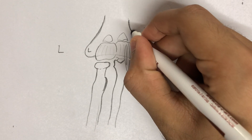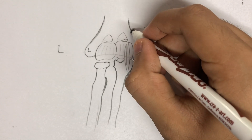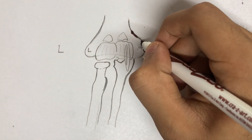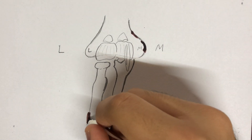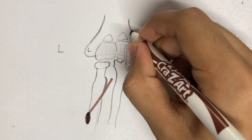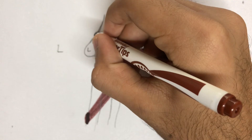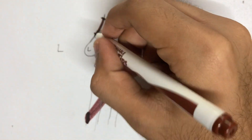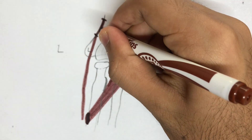The cubital fossa is bounded medially by the muscular fibers of the pronator teres, which arises from the lower part of the medial supracondylar ridge, with the common flexor origin inserted onto the lateral surface of the shaft of radius in its middle aspect. The lateral border of the cubital fossa is formed by the brachioradialis muscle, which originates from the upper two-thirds of the lateral supracondylar ridge, runs laterally downwards, and inserts into the styloid process of the radius.